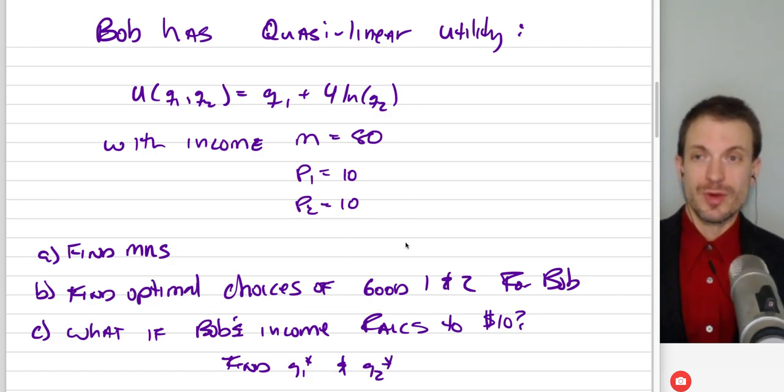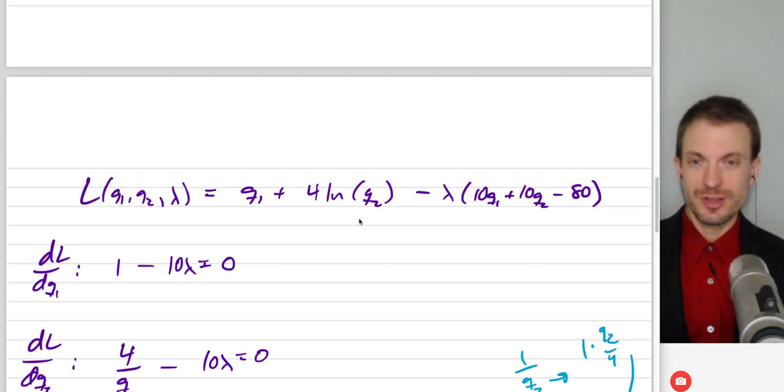So the first thing we could do is write out the Lagrangian. Take the partials with respect to Q1, Q2 and lambda. Then solve the system of equations, plug into budget constraint and you'd get the tangency condition, plug into budget constraint to evaluate and you'd get your optimal choices. Let's take a look at that.